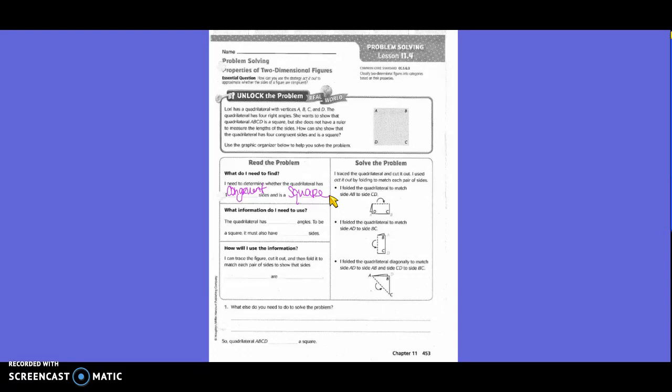What information do I need to use? The quadrilateral has four right angles. To be a square, it must also have four congruent sides.